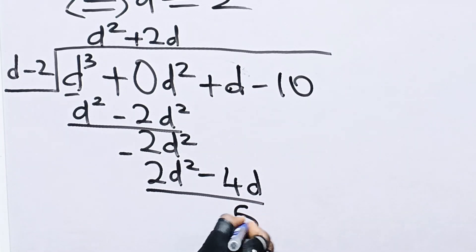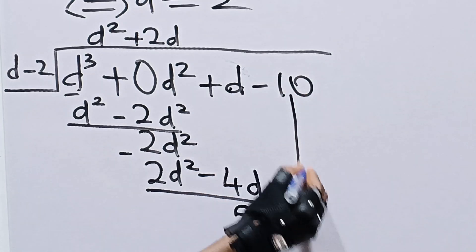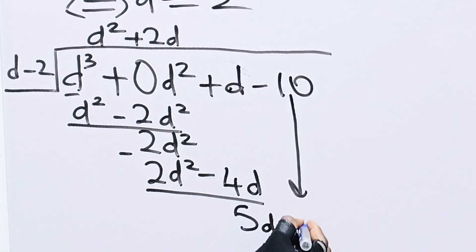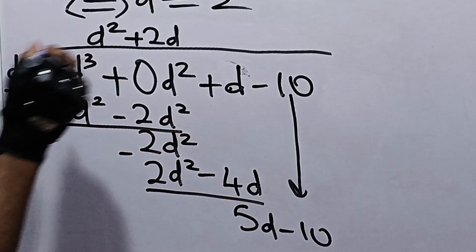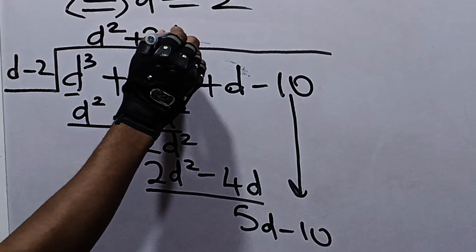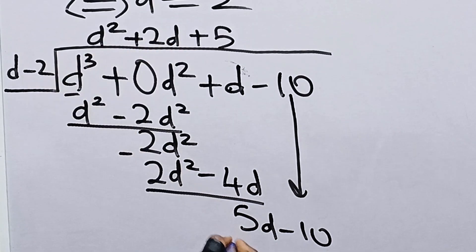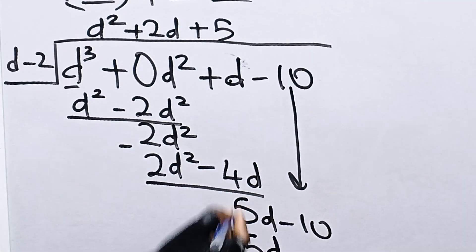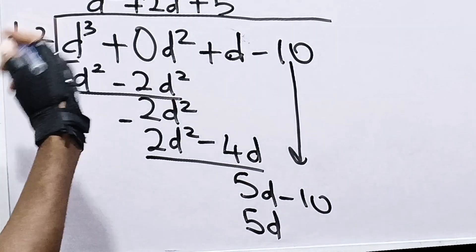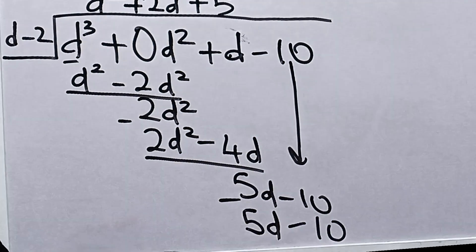After subtracting, d minus negative 4d gives us 5d. Bringing down the negative 10, we have 5d minus 10. Then 5d divided by d is 5, and 5 times negative 2 is negative 10. Subtracting gives us a remainder of 0.